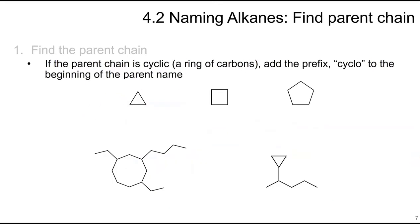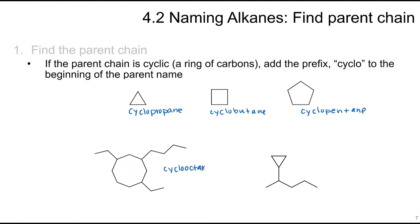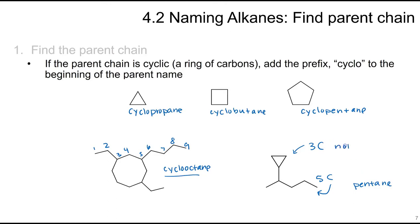If the parent chain is cyclic — a ring of carbons — just add 'cyclo' to the beginning of the parent name. So you get cyclopropane, cyclobutane, cyclopentane, and cyclooctane for an eight-carbon ring. The parent name may not include carbons that are both in and outside of the ring. If a cyclic structure comes off a ring with three carbons but a five-carbon straight chain also exists, the parent is pentane, not cyclopropane — we're looking for the longest standalone carbon chain.